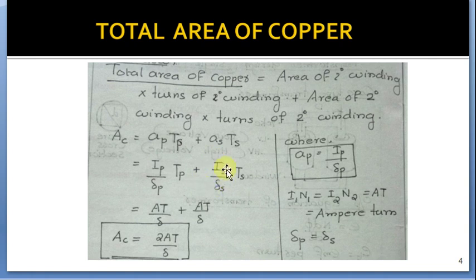Current density at primary and secondary are the same. Also I into T are ampere turns, call it as AT. At primary and secondary, then it will become AT by delta plus AT by delta, that is 2AT by delta.